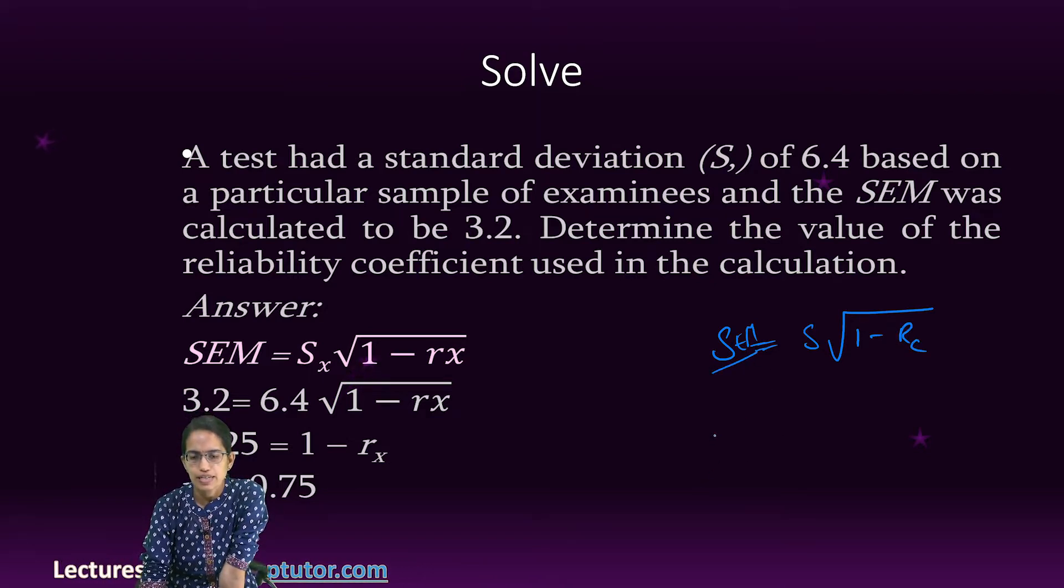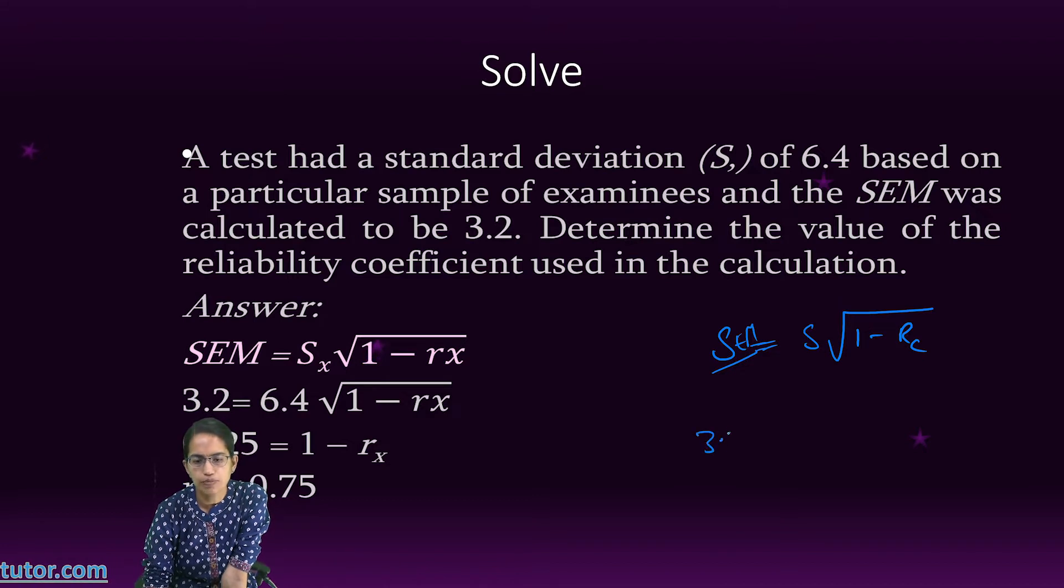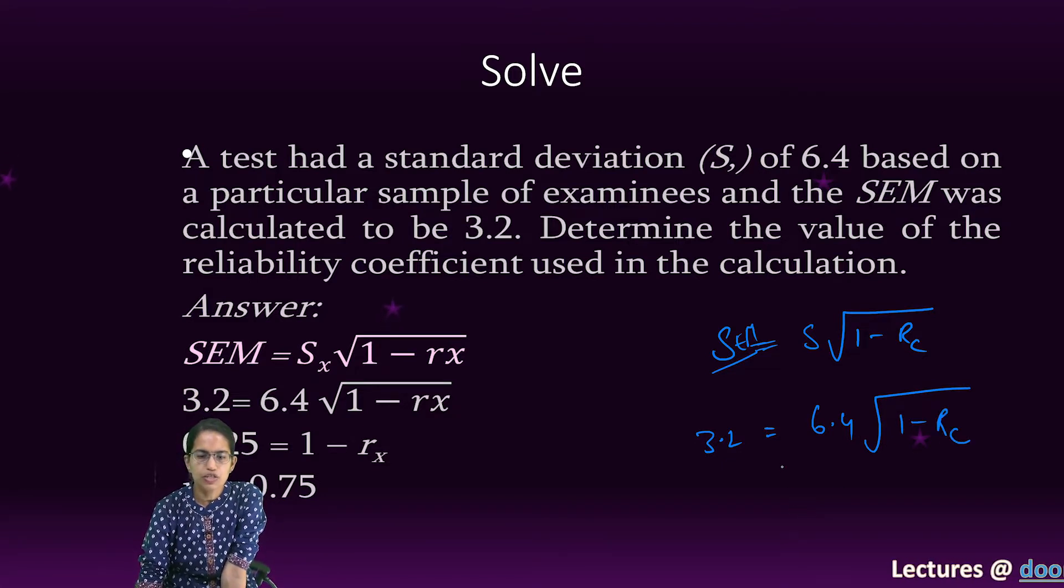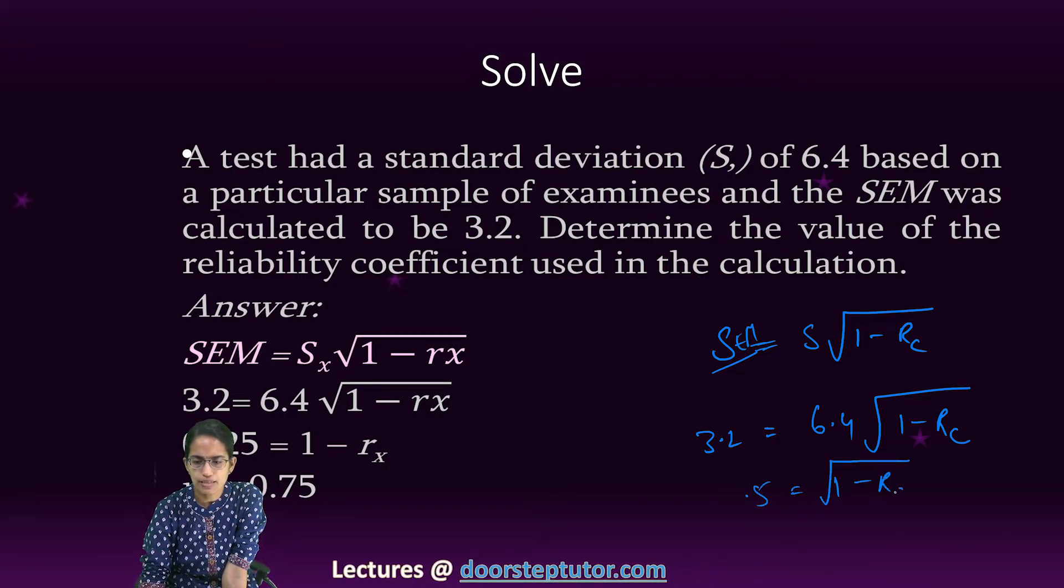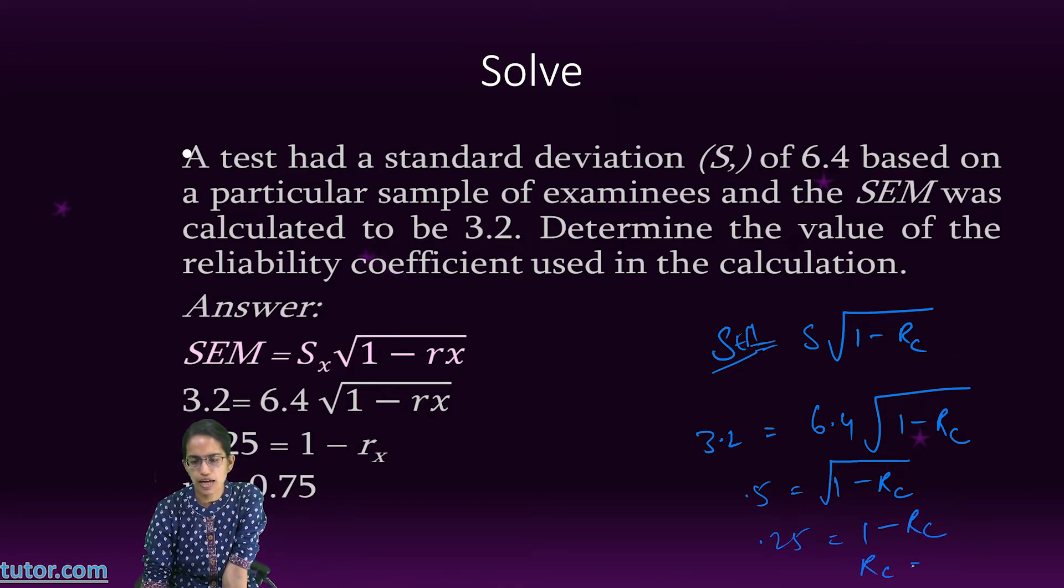So let's say my standard error of mean is 3.2. This equals to 6.4 which is the standard deviation under root 1 minus the reliability coefficient. That gives me 0.5 is equal to root of 1 minus reliability coefficient. That means 0.25 is equal to 1 minus reliability coefficient. So reliability coefficient is 0.75.